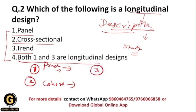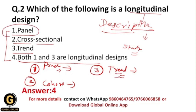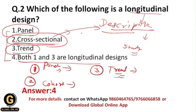The third longitudinal design is trend study, in which we focus on the same population of people using opinion poll surveys to look at their attitudes over time — we get opinions from participants at specific times or over a period of time from the same population. The correct answer is option 4: panel study and trend study are both types of longitudinal designs. Cross-sectional study is another type of descriptive design, where we study different populations at a specific point in time, not over a longer period.